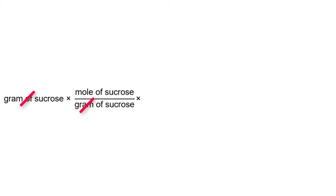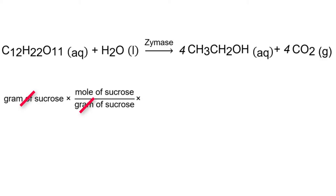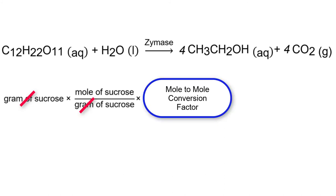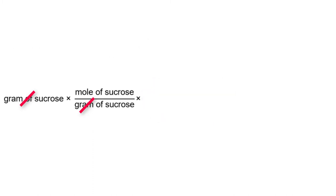Now that we are in moles of sucrose, we can get into moles of ethanol. Here is where the mole-to-mole conversion factor from the balanced chemical equation comes in. How should that conversion factor be written? Feel free to shout it out at the screen. If you said moles of ethanol on top and moles of sucrose on the bottom, you would be 100% correct. As you can see, moles of sucrose are going to cancel out with each other and then moles of ethanol are left.